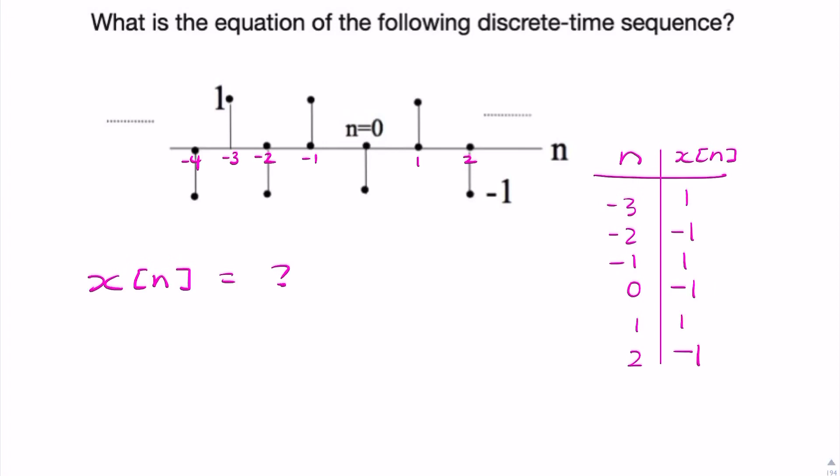So whenever you have something like that, it's clearly going to be some power of minus 1. So it's minus 1 to the power of something, and that something is related to n.